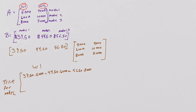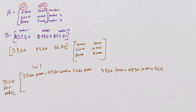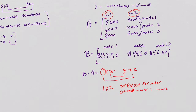So here we go: 39.50 times 5,000, plus 44.50 times 6,000, plus 56.50 times 8,000. Then for warehouse 2, we do the same row: 39.50 times 4,000, plus 44.50 times 10,000, plus 56.50 times 5,000. That gives us the end of our 1 by 2 matrix.